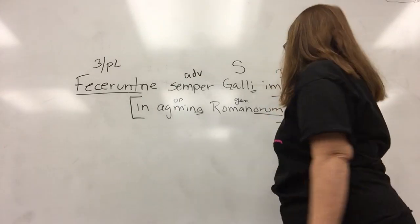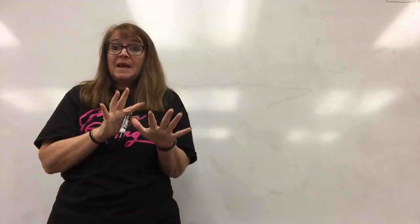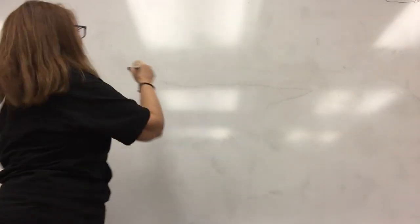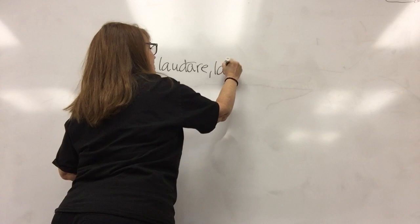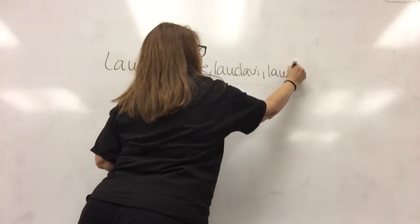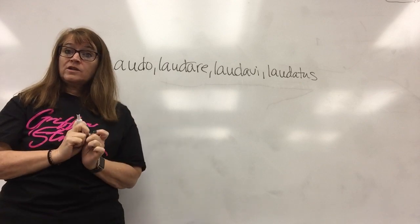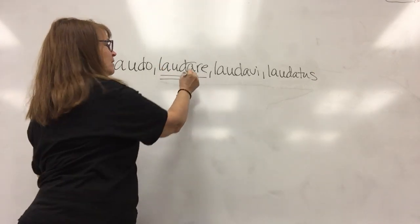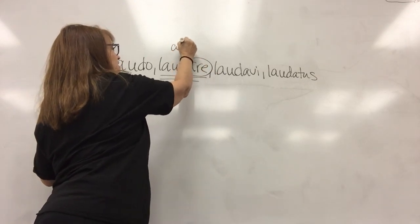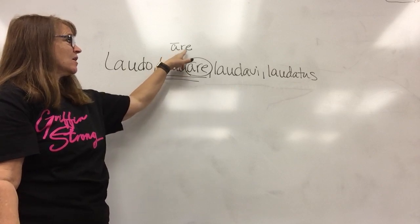You ready to start our new lesson, which is lesson 10? Lesson 10 is about the second conjugation. Let's review the first conjugation — our model verb is laudo. The four principal parts of laudo are: laudo, laudare, laudavi, laudatus. Now remember, the way we know what conjugation a word belongs to is by the second principal part. We go to the second principal part and look at those last three letters. In the first conjugation, it's A-R-E.